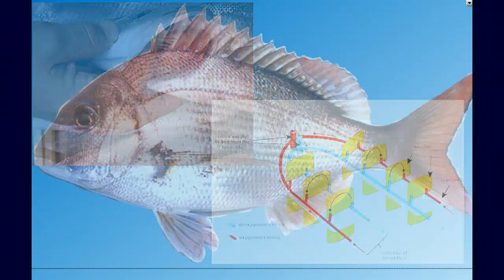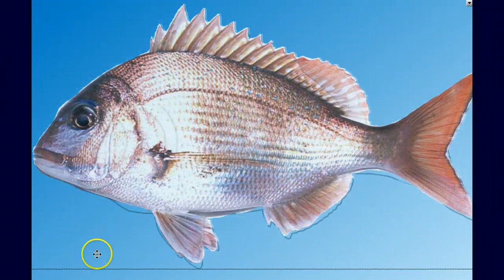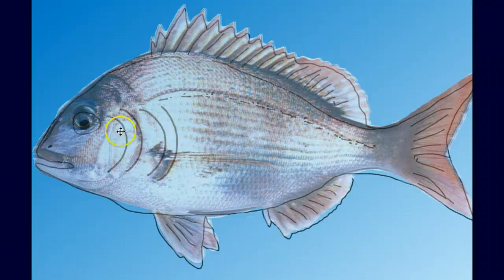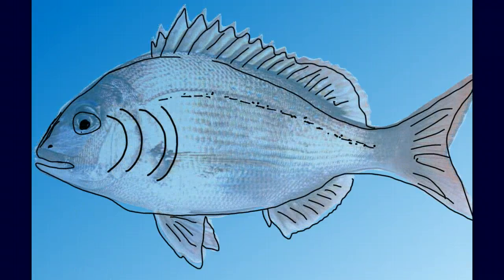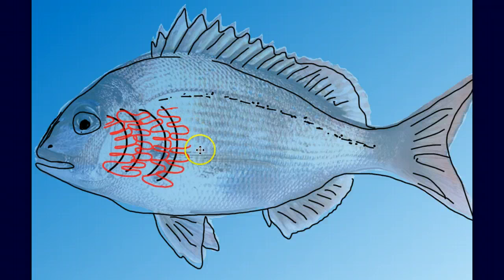We're going to need a little x-ray vision to look inside our fish here to see the four bony gill arches. Those gill arches are supporting this very highly folded, thin membrane of the gills, which I'm representing by these red squiggly lines here.